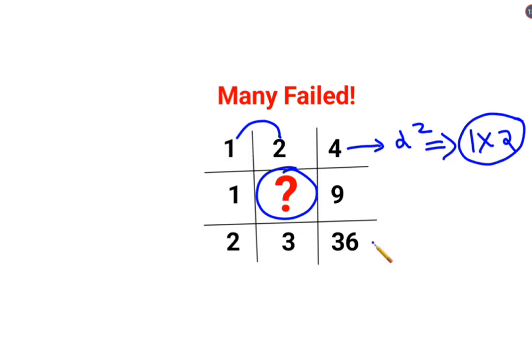So here also if you see 2 into 3 that gets you 6 whose square gets you 36. So here what should you do? 1 multiplied by some value.